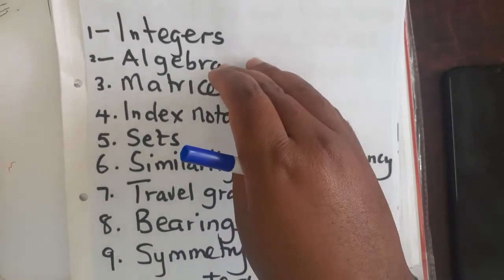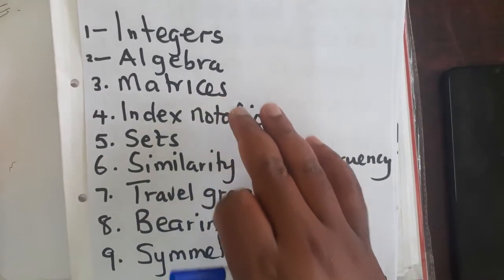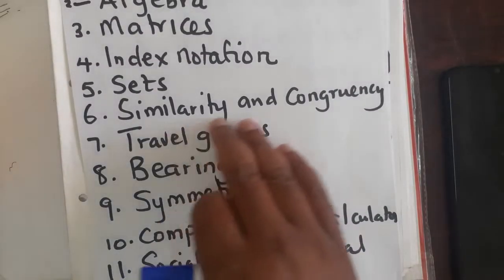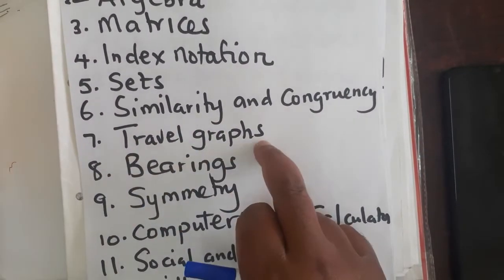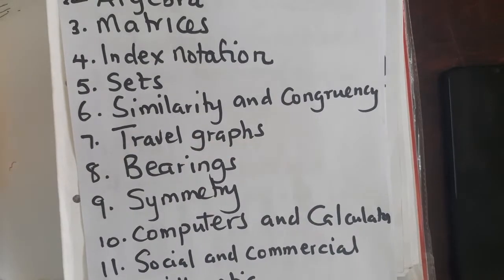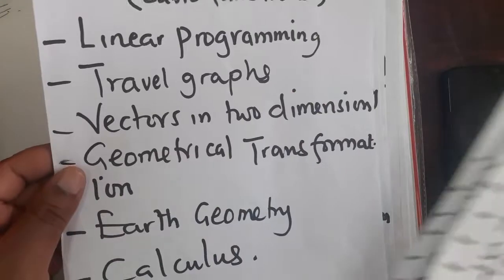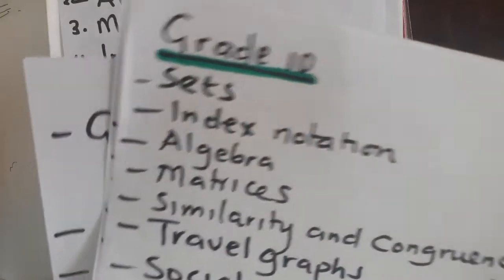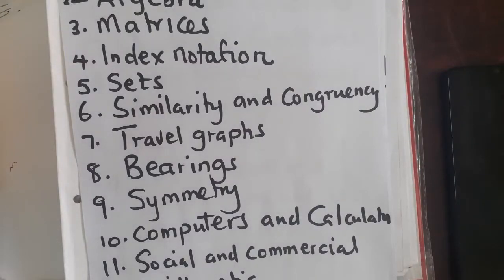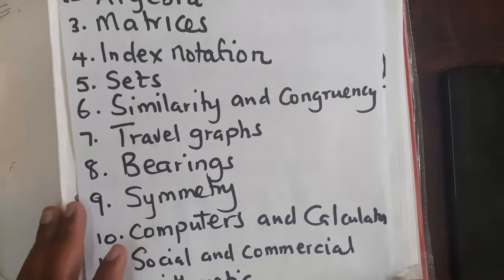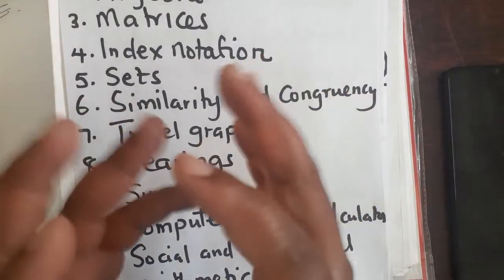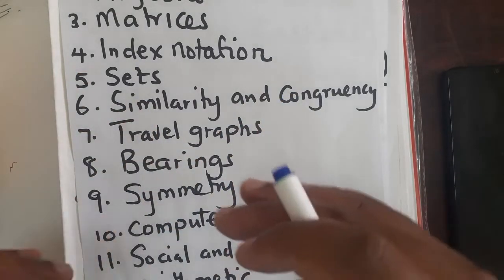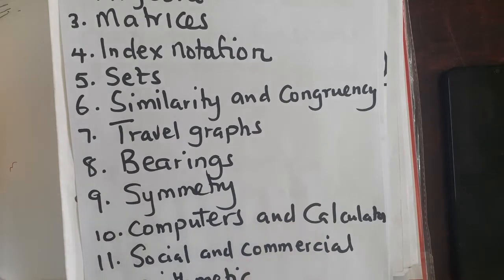Then from there, the second one should be algebra, followed by matrices, then index notation, sets, similarity and congruence, travel graphs. Now, for travel graphs, what we have decided to do is we have combined. You realize that in grade 12, we have got travel graphs. In grade 10, we have got travel graphs. So, our videos on travel graphs have been structured in a manner that we have taken into consideration all the concepts that you must cover at grade 10 and 12. So with the travel graphs, we are safe in our hands.